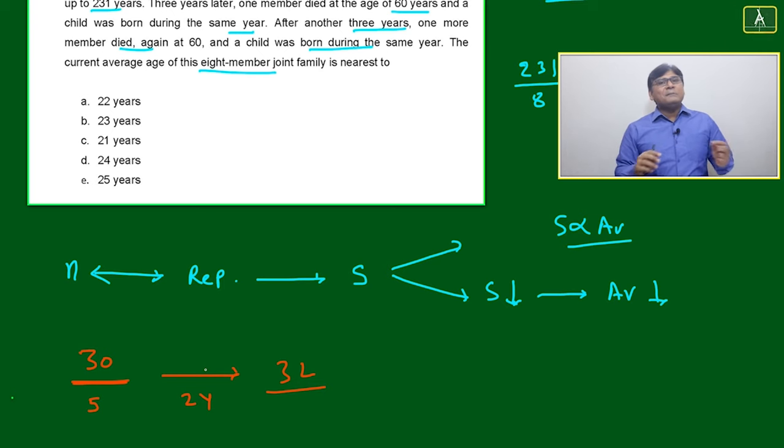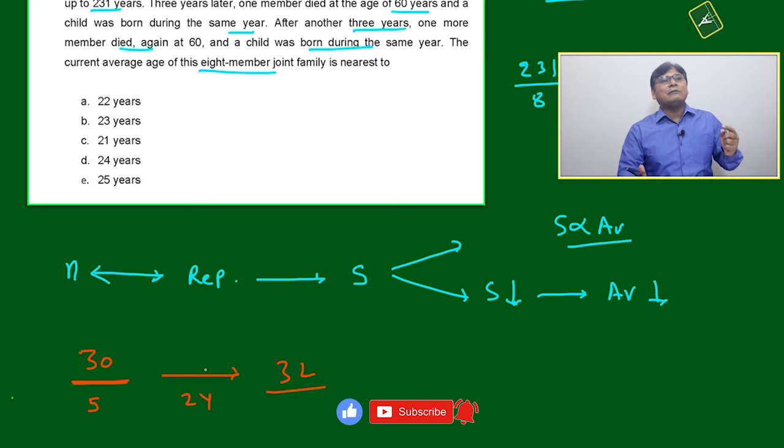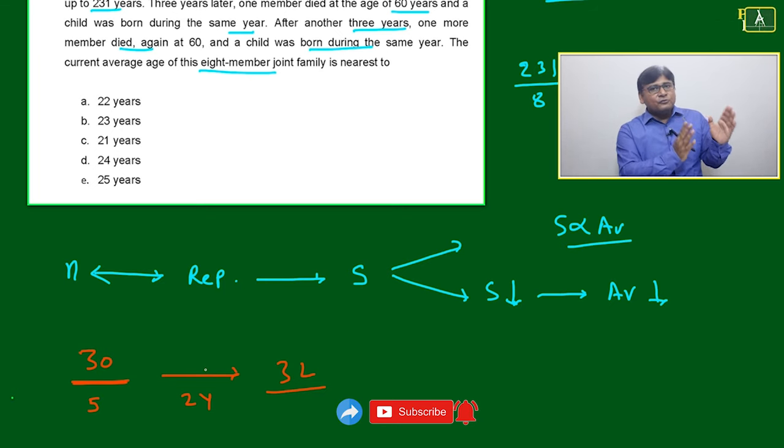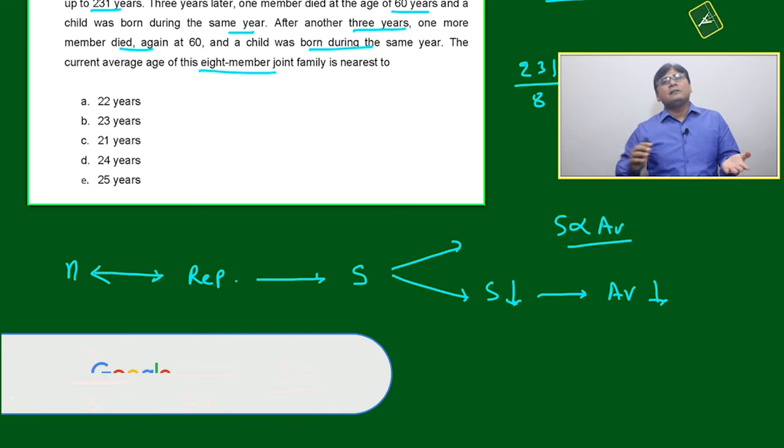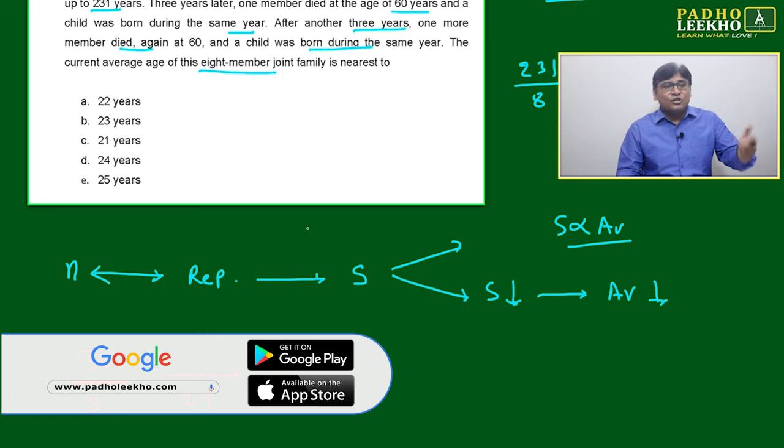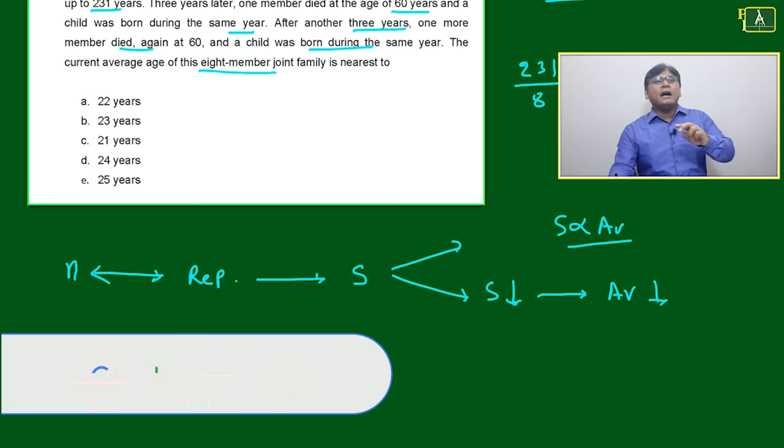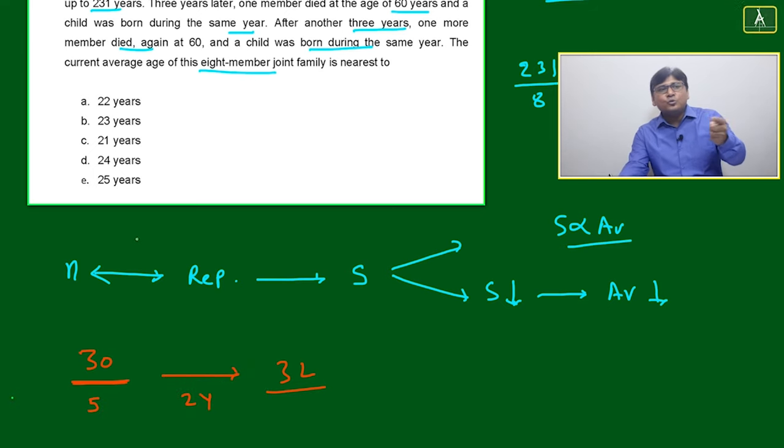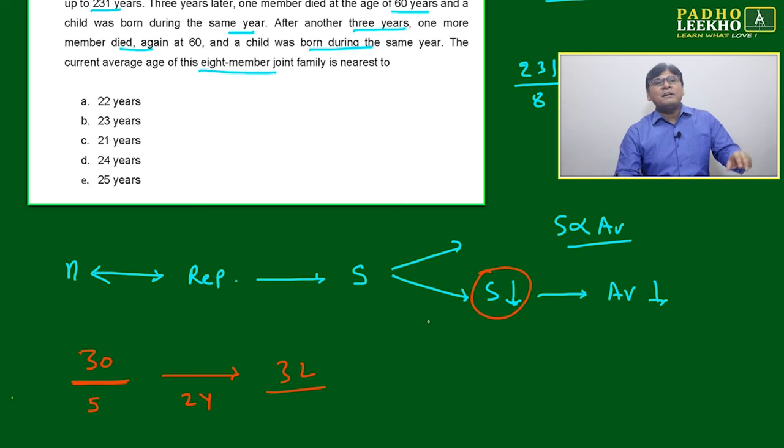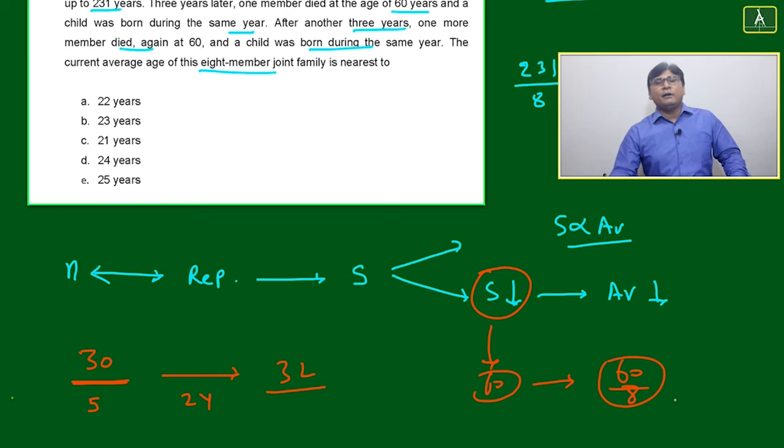If no members are changing, if no member is adding or going out - means if n is not changed - then how many years will elapse, average will go up that many years. Whatever average of your family today, after three years you just add by three. First we'll take how average is changing with respect to number of years. Afterwards we'll do the deviation - if one is going out, one is coming in, then how much S is decreasing. One person dying at 60, another taking birth at zero means loss of 60 years. The sum will decrease by 60.